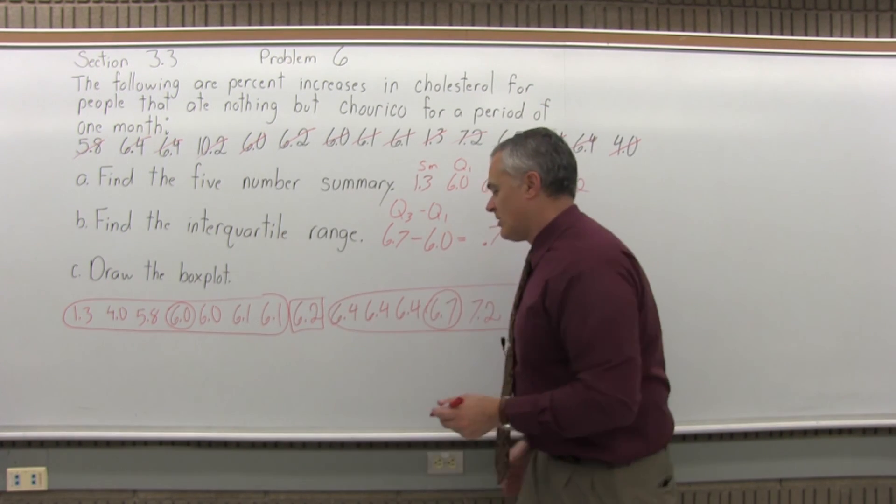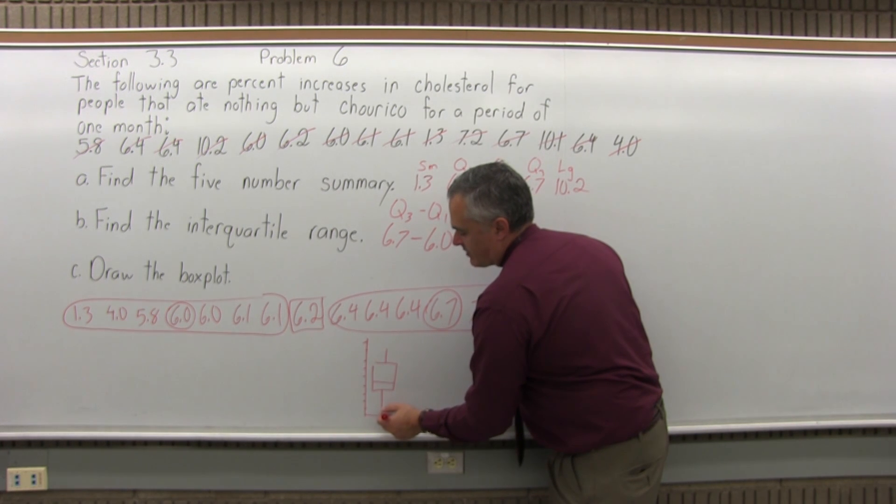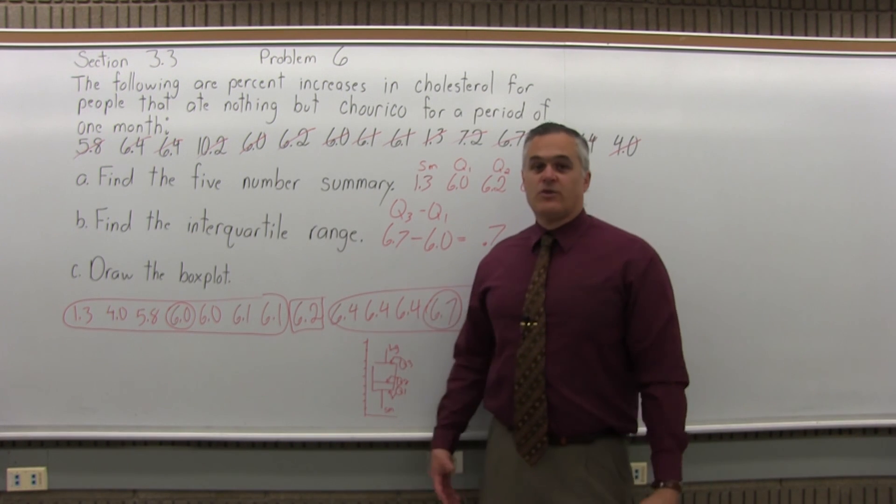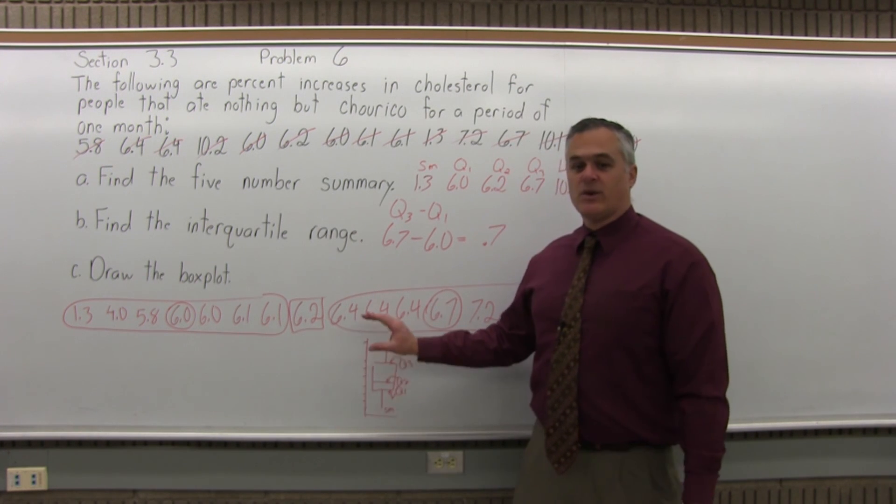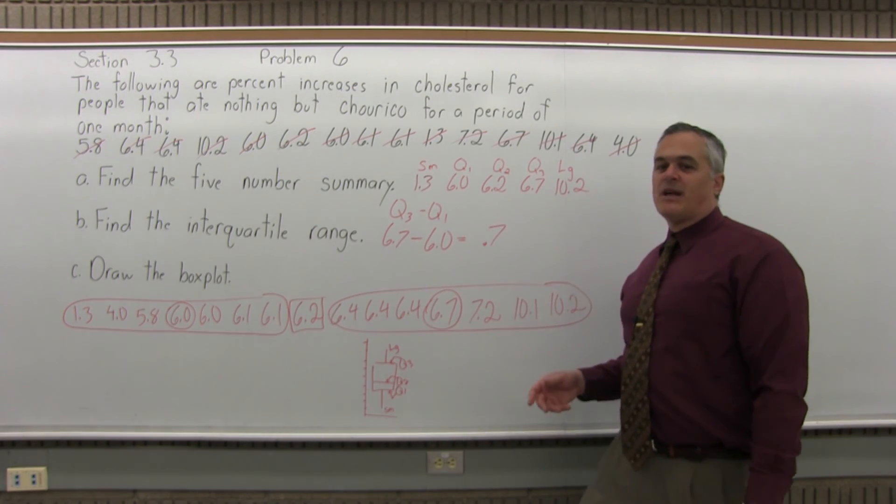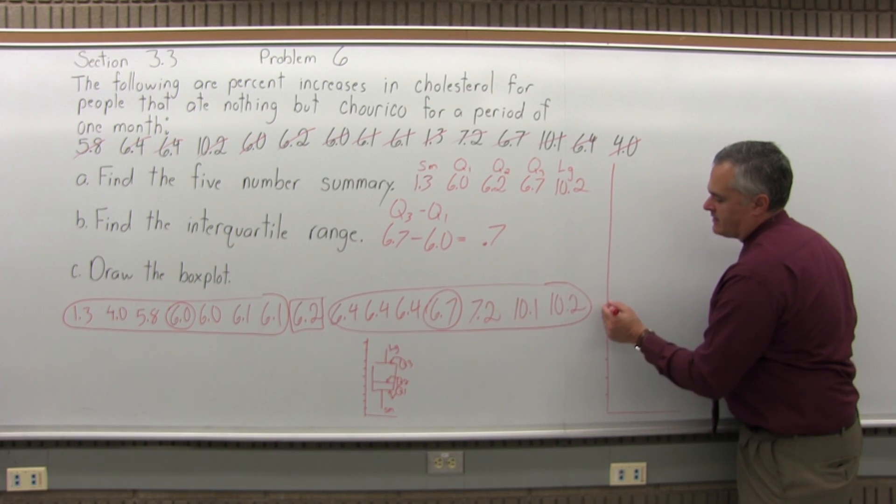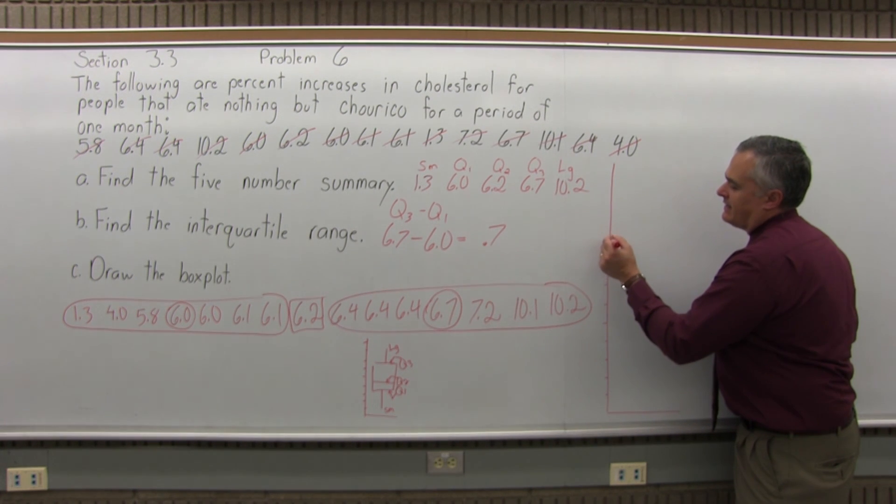Well, the box plot for any problem is a diagram. You'll have a number scale, and there's a box with a line inside the box somewhere, and a line coming out of the bottom and out of the top. The line coming out of the bottom goes to the smallest data value. The bottom of the box is Q1. The line in the box is Q2. Top edge of the box is Q3. And the line coming out of the top of the box is your largest data value. So we're going to draw a picture like that. And you can draw it going side to side too. So the biggest data value I have to deal with is 10.2, so I can draw 10 lines, 11 lines even. 1, 2, 3, 4, 5, 6, 7, 8, 9, 10, 11.